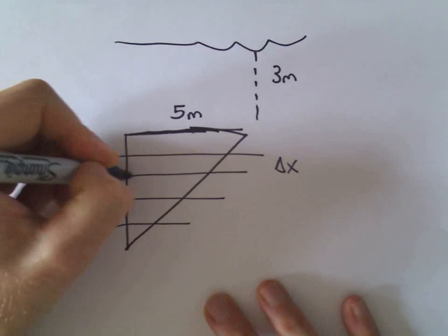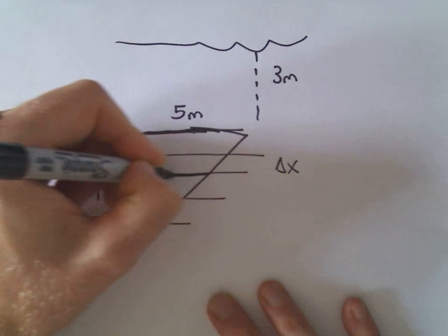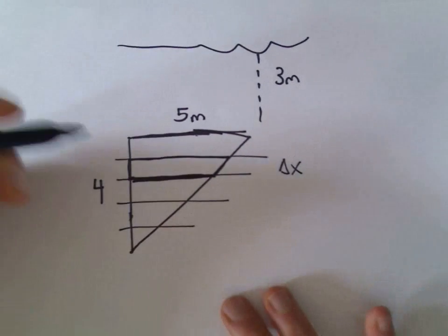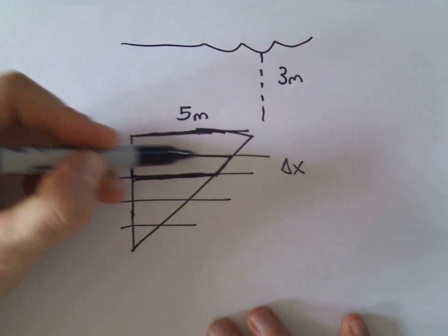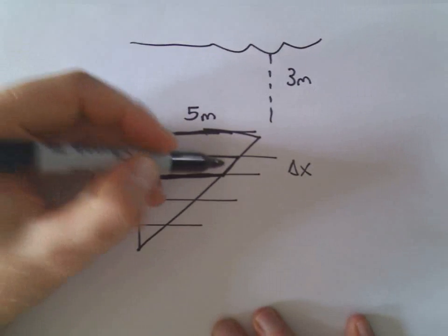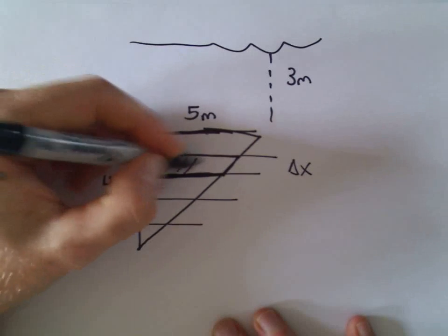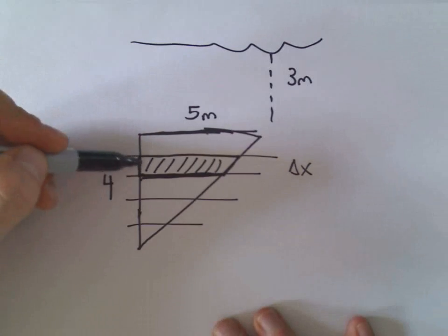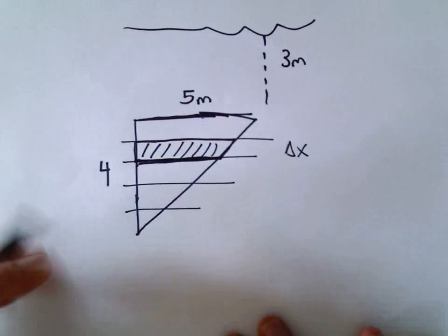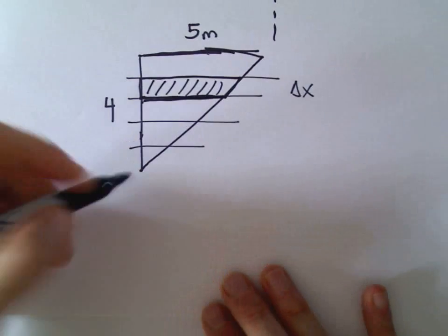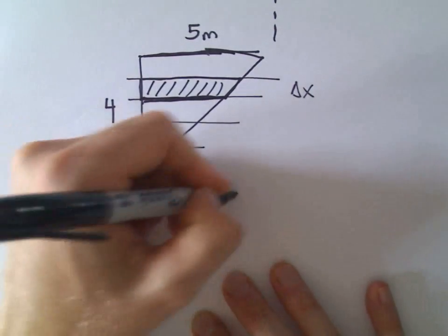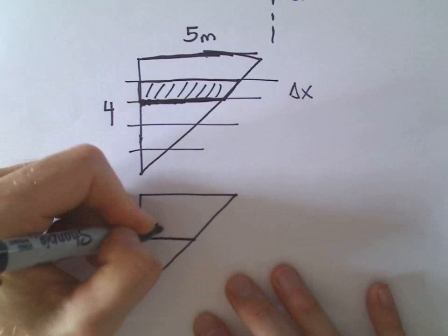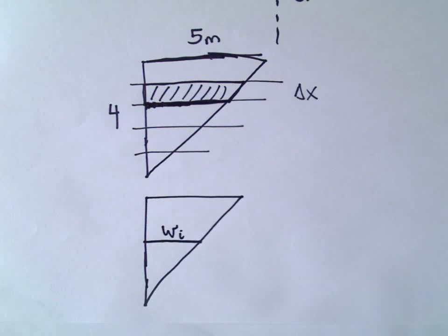Let's think about a generic piece in the middle. Each slice looks like a trapezoid, but I'm going to approximate the force on each little slice as though that region were a rectangle. I'll call the width of the i-th piece w sub i. We want to think about what the force is on that i-th piece.